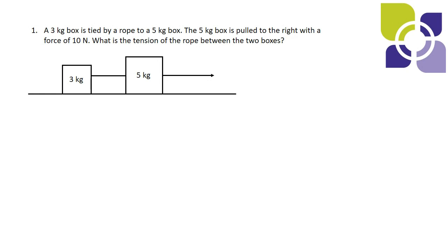Just like any force problem, we always start with free body diagrams. We have two different objects, so we'll do a free body diagram for mass 1, the 3-kilogram one on the left. It has the force of gravity pulling it downwards, the normal force pushing it back upwards, and the tension in the rope pulling mass 1 to the right. There's no friction — if we aren't told anything about friction, we assume it's zero — so the only horizontal force is the tension.